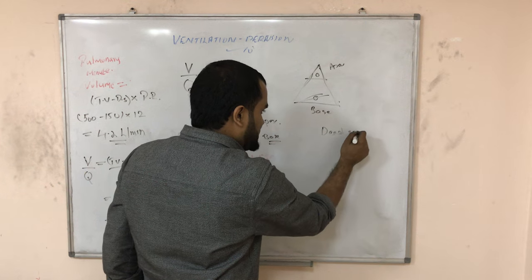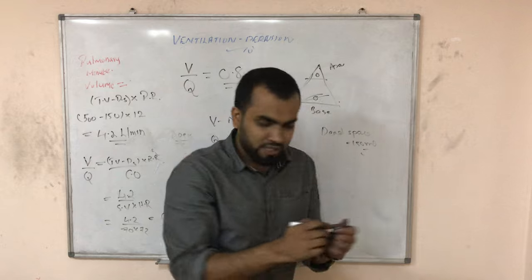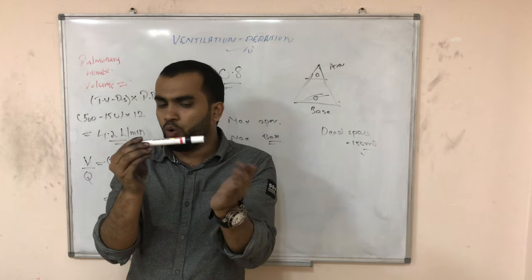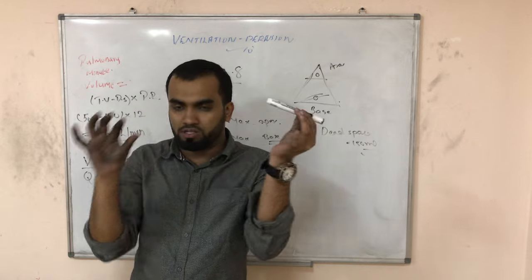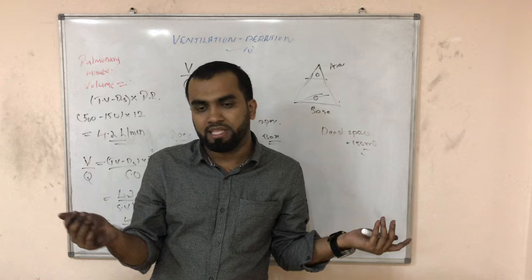Now dead space. Dead space is 150 ml. So what is this dead space? See, this is a pipe. If I am pouring 100 ml of water, can I collect here 100 ml? No. Some will be lost in the walls. Same if you breathe in, some air is not used for breathing. That is called dead space.